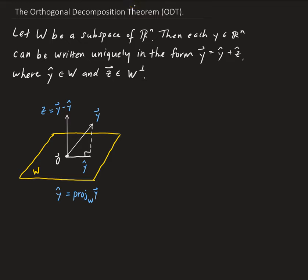In this lesson, I'm going to talk about the orthogonal decomposition theorem. So let's suppose that we have a subspace of Rn — representing this by a plane. Then for each y belonging to Rn, this can be written uniquely in the form of y-hat, which is the projection onto the subspace W, plus the orthogonal vector z, where z is the orthogonal complement of W. This is an extension of the previous video where we projected a vector onto another vector.